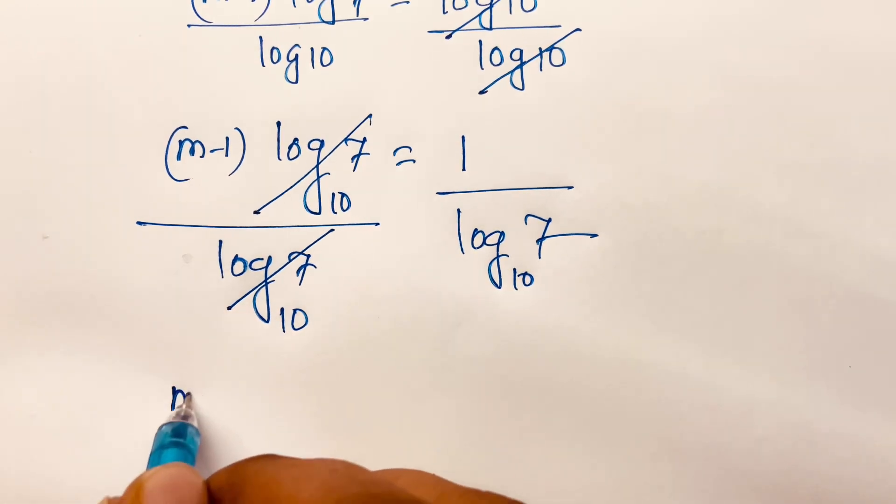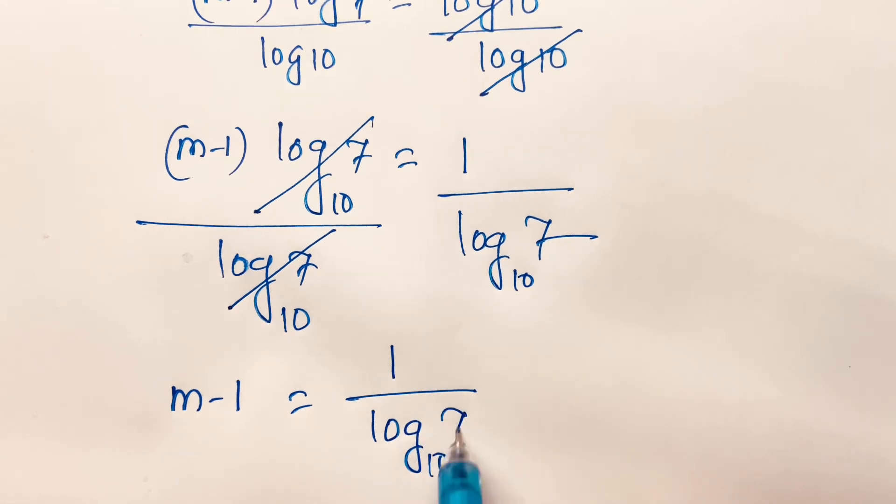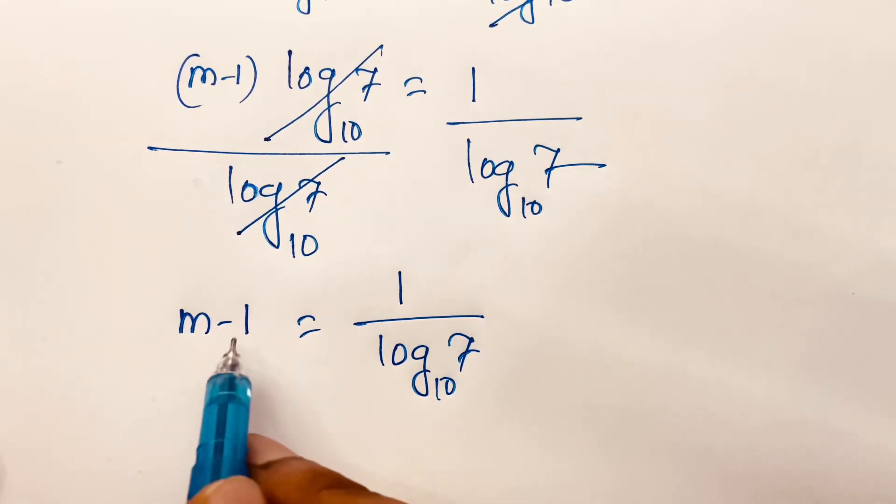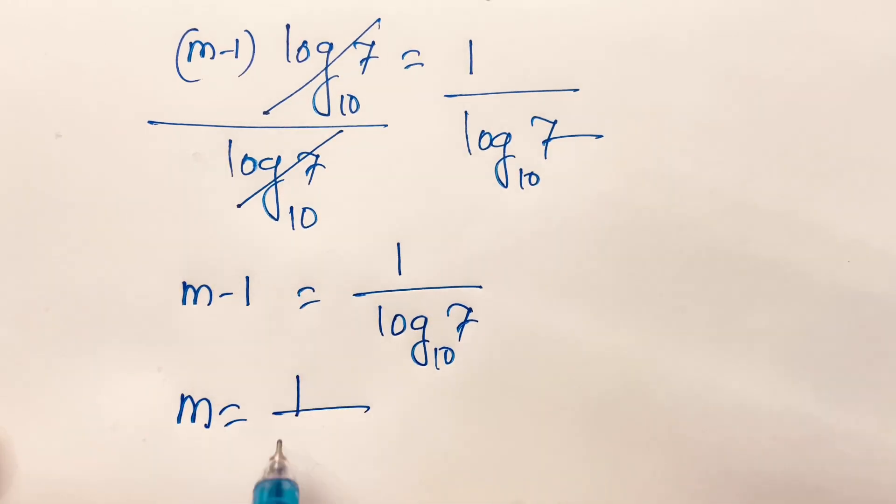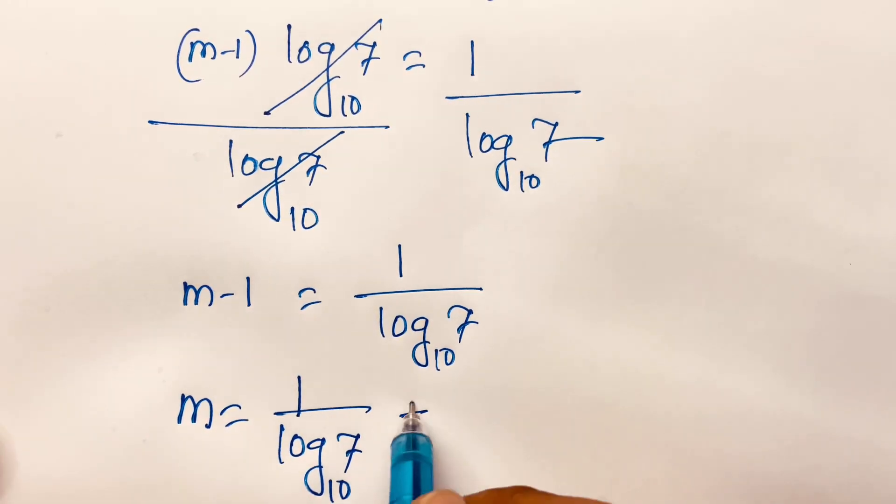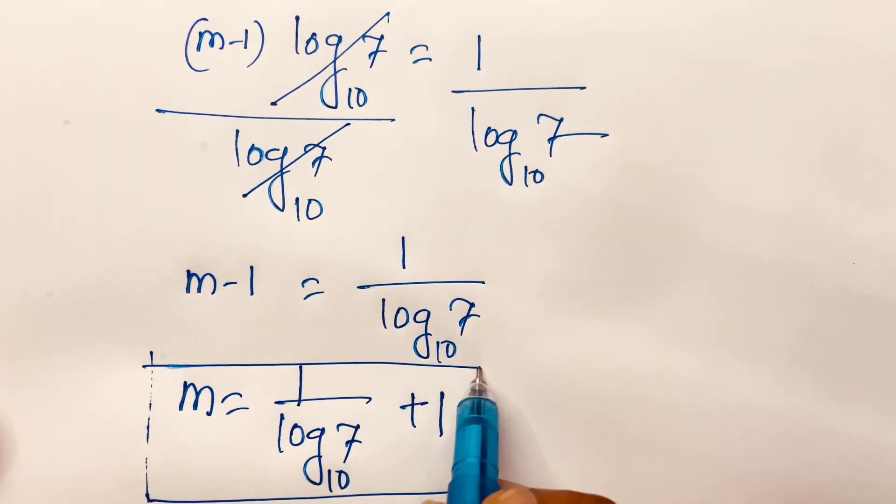Then I move 1 to the right side, so m = 1/log₁₀(7) + 1. This is our final answer, the value of m.